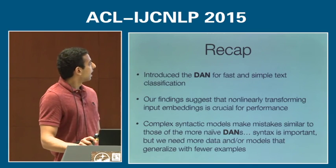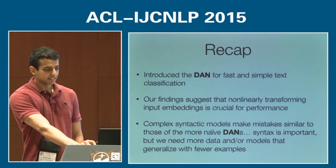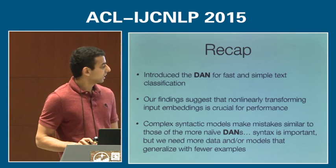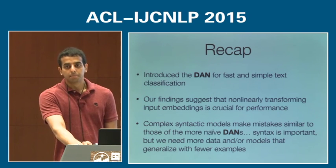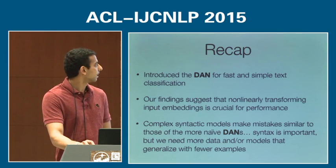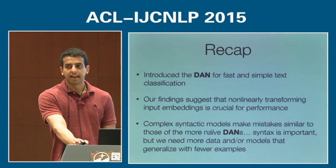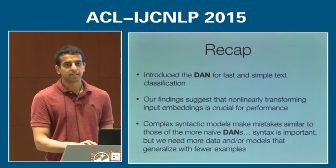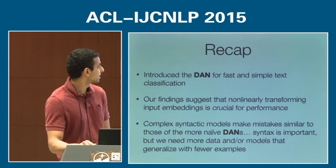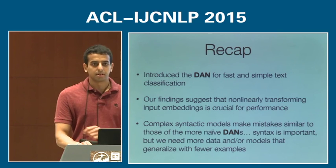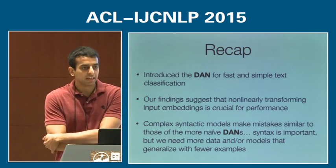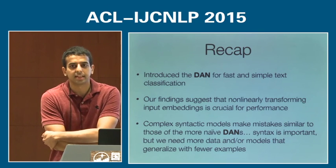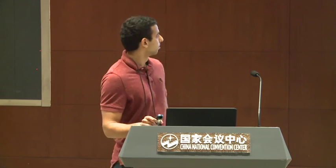To recap: we introduced the DAN for fast and simple text classification. Our findings suggest that nonlinearly transforming the input is crucial for performance — perhaps even more so than modeling syntax for these two tasks. Furthermore, we found that more complex syntactic functions make mistakes similar to those of the unordered DAN, as shown with the negation experiment. In conclusion, syntax is obviously important, but for these tasks we need more data and/or models that can generalize to things like negation with fewer examples. The code is available at the link shown.